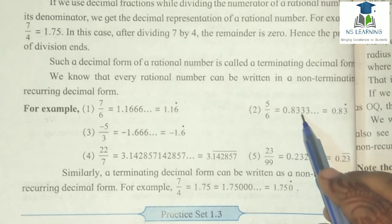Our solution is: 9 upon 37 equals 0.243243243... dot dot means repeating more times, equal to 0.2̄4̄3̄ (bar notation). This type of number is called a Non-Terminating Recurring Number.